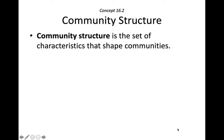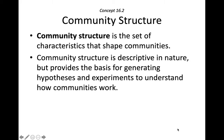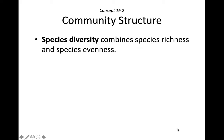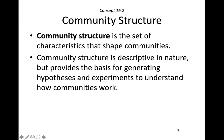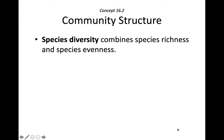Species composition tells us who is in a community. And community structure is the set of characteristics that shape communities. Community structure is descriptive in nature but describes the basis for generating hypotheses and experiments to understand how communities work. In order to describe communities, we often use species diversity, which combines two characteristics: